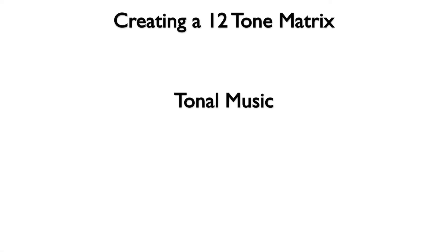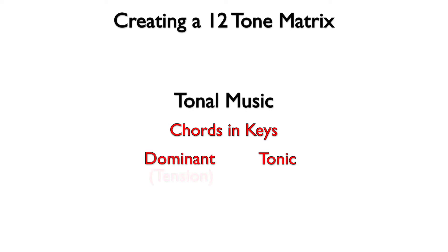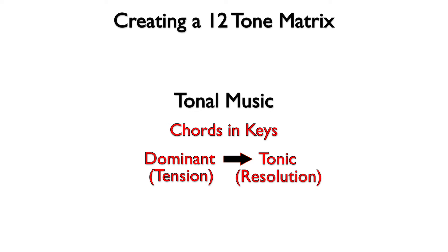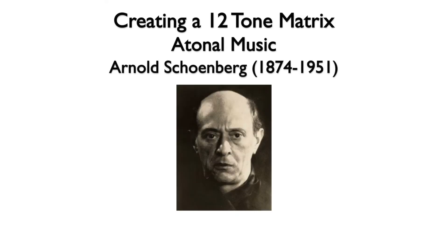Tone of music is organized by the relationships between chords and keys, the most important relationship being between the tonic and dominant chords, with tension created by the dominant and resolution created by the movement from the dominant to the tonic. In an attempt to find a system for organizing atonal music, Arnold Schoenberg created serial music.